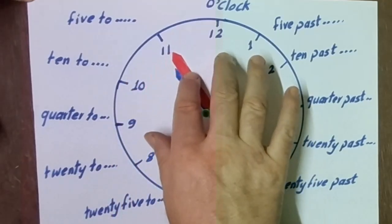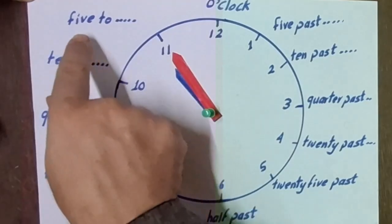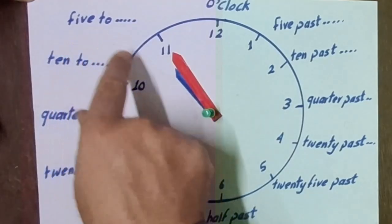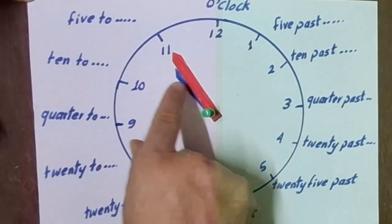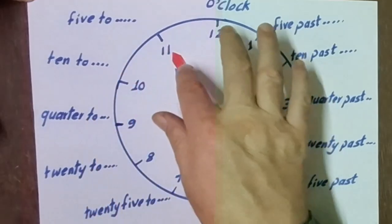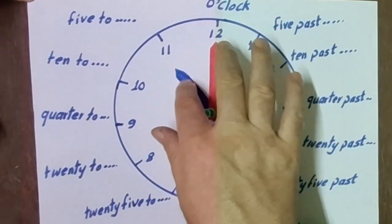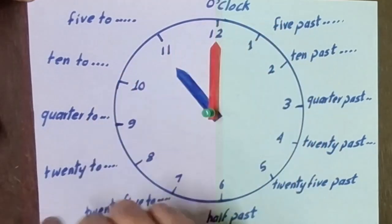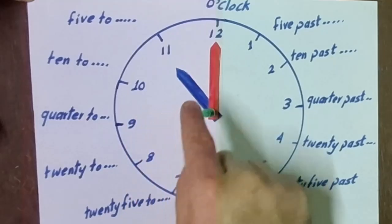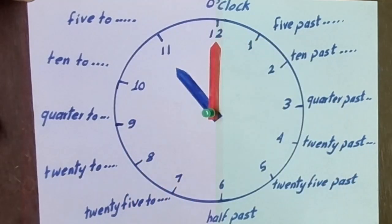When it goes to 10, it will be 'ten to 11.' When it goes to 11, it will be 'five to 11.' And when the long hand reaches 12, it will be '11 o'clock.' Thank you very much for watching.